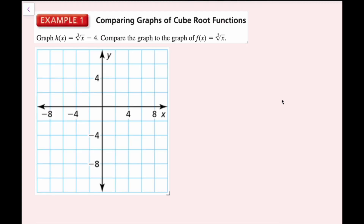For example 1, we're going to graph h(x) equals the cube root of x minus 4, and then compare it to the graph of f(x) equals the cube root of x. When I'm graphing, I like to make a table of values. I'm going to put 0 in the middle because I can have both positive and negative numbers. Just like with square root functions, we want to put numbers that give us clean values from our cube root operation, so I want to put in perfect cubes.